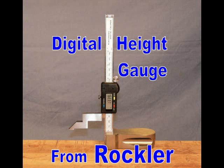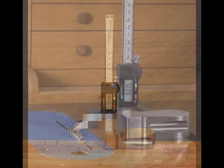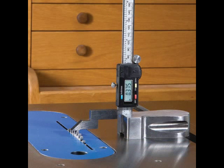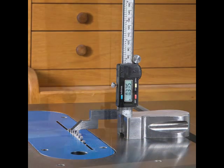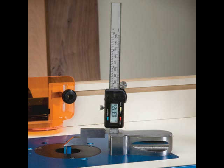Rockler's Digital Height Gauge is a precision instrument for increasing the accuracy of your shop. A heavy steel base makes the gauge stable enough to take accurate measurements at the table saw, router table, or anywhere else you need information.